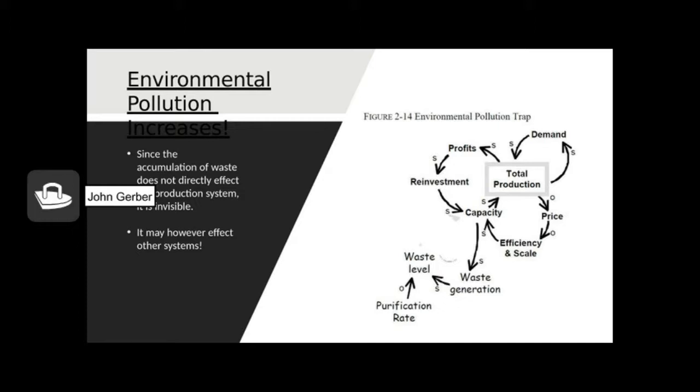Returning to our system dynamics model, we can take a look at what's happening here. Once again, capacity increases, increased capacity increases production generation of waste, increased generation of waste increases the waste level, the purification rate is not fast enough to clear it up. And so we've got an increase in waste, things like phosphate fertilizer. The problem is that this often happens someplace else downstream away from where the production happens. Let's look at an example.